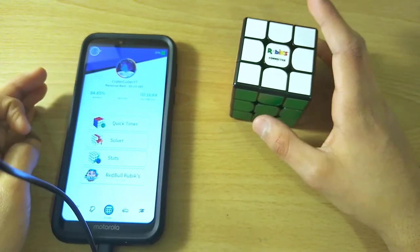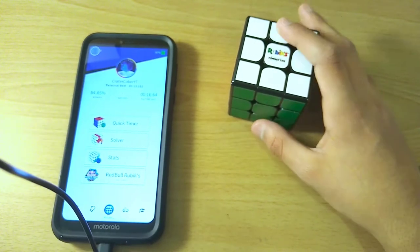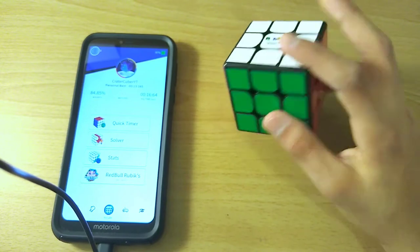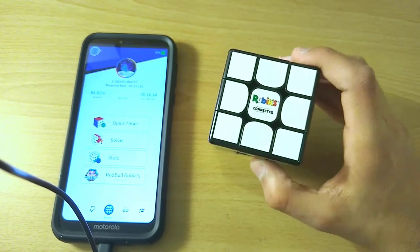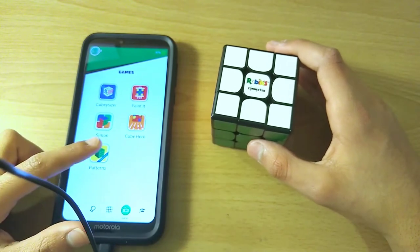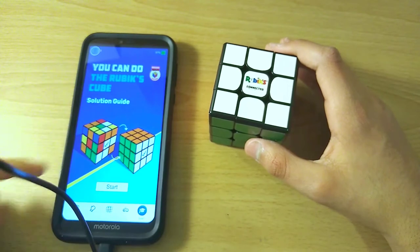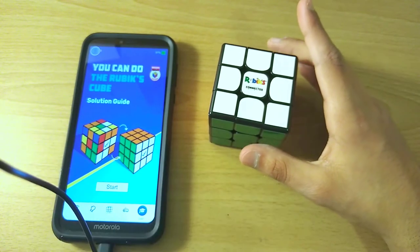So basically quick timer is like it doesn't give you scrambles, but you just do it on your own. Solver is basically where it'll tell you how to solve your cube from where it is at the current position. And then you have a few games, that is four right now, and there's like appears to be one called patterns coming soon. And finally, it's got the solution guide. But we'll save this part for another video.